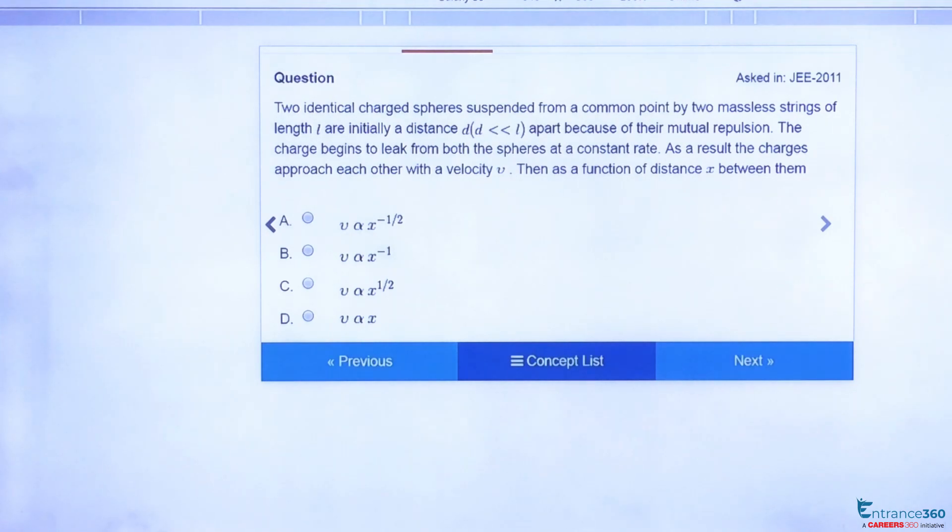The question says that two identical charged spheres are hung from a point by a massless string such that there is a force between the spheres. Due to this force, the distance is d between spheres, which is very less than the length of string.